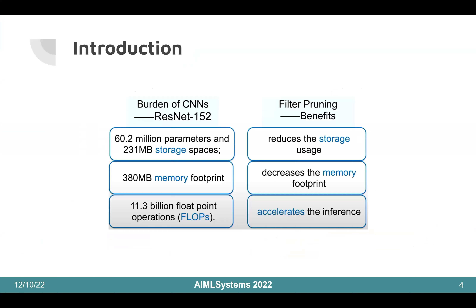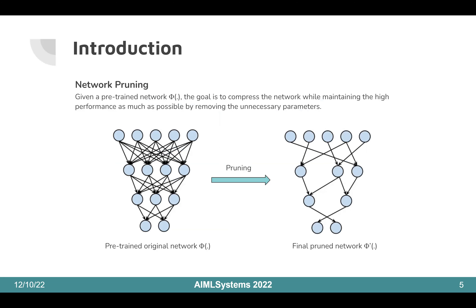Let us first discuss why filter pruning is important. Filter pruning is beneficial for reducing the burden of CNNs. The benefits include reducing the storage of the model, which has millions of parameters, hundreds of megabytes of memory footprint, and billions of FLOPs to accelerate the performance. Network pruning is one of the fields of network compression. Given a pre-trained network, the goal is to compress the network while maintaining high performance. It usually removes all redundant parameters or computations, as shown in the figure.